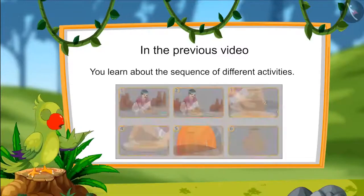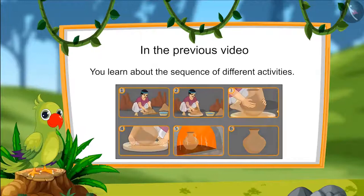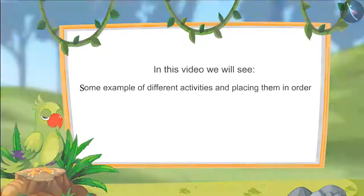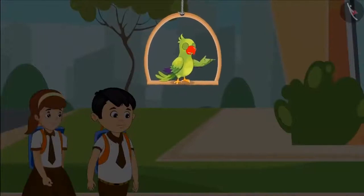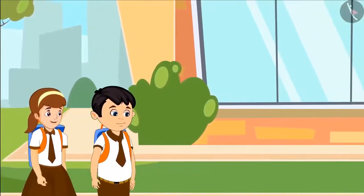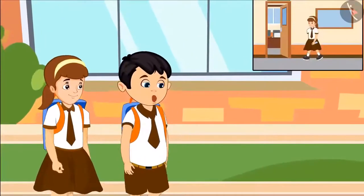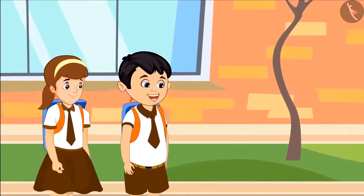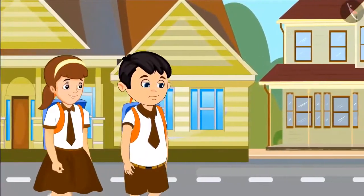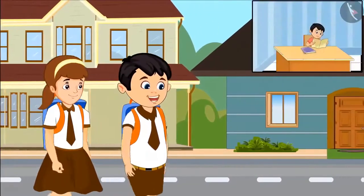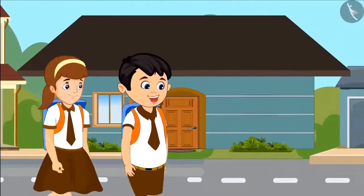Hello kids. In the previous video you learnt about the sequence of different activities. In this video we will see some examples and place them in order. Chotu and Arati are talking while coming home from school. Chotu says 'Today I had a lot of fun in school.' He explains that madam praised him, saying he always completes his work on time. When asked when he does his work, Chotu says he finishes all his homework as soon as he reaches home, and only then goes to play.